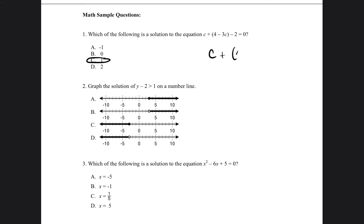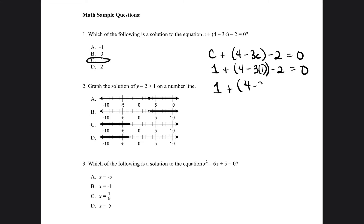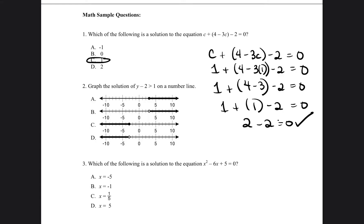So c plus 4 minus 3c minus 2 equals 0. I'm going to insert the answer I got for c. So 1 plus 4 minus 3 times 1 minus 2 equals 0. Then 4 minus 3 minus 2 equals 0. 1 plus 1 minus 2 equals 0. 2 minus 2 is equal to 0. And that is correct. So my answer is 1.